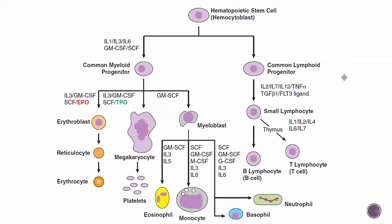Here is the diagram of RBC synthesis. The hematopoietic stem cell, or hemocytoblast, matures because of interleukin 1, interleukin 3, and interleukin 6. Then, because of erythropoietin, it will become erythrocytes. We will later discuss megakaryocytes, lymphocytes, and other WBCs, but for now we focus on the erythrocyte lineage.